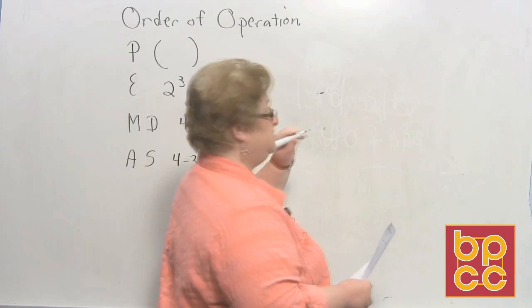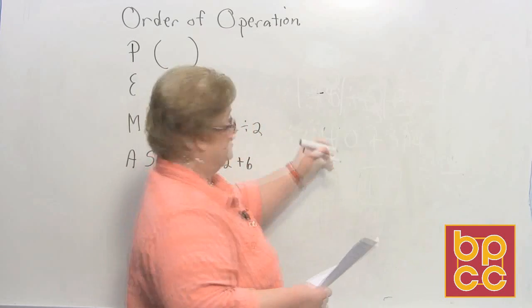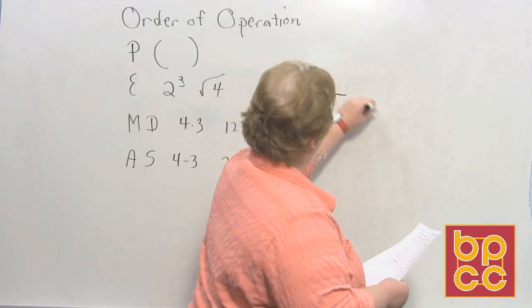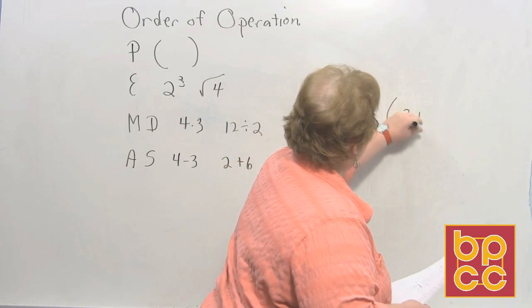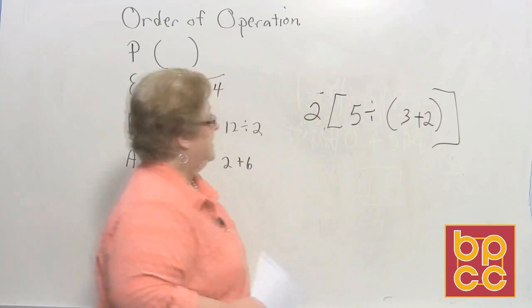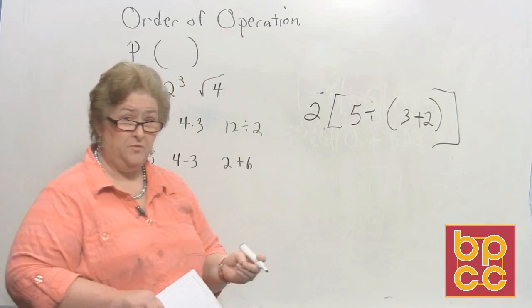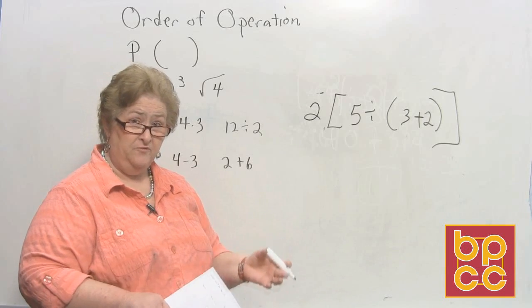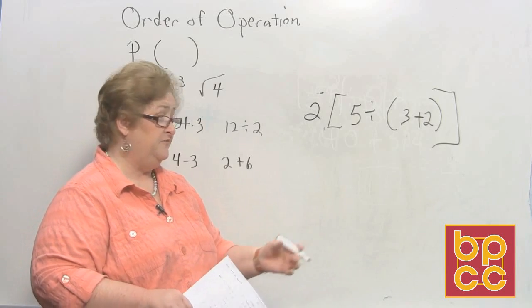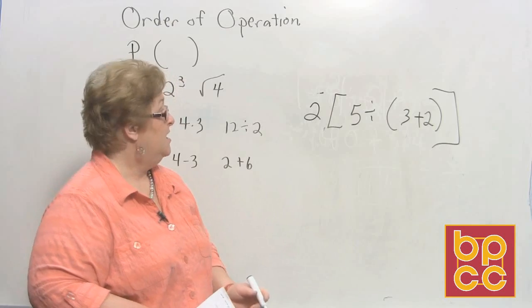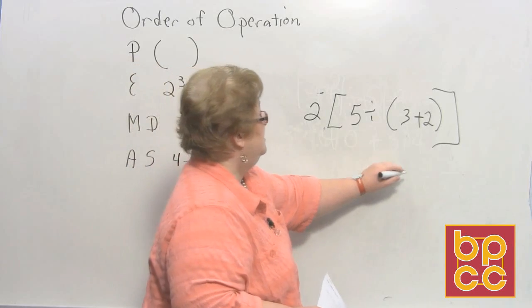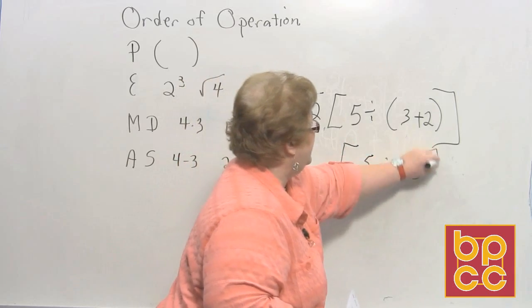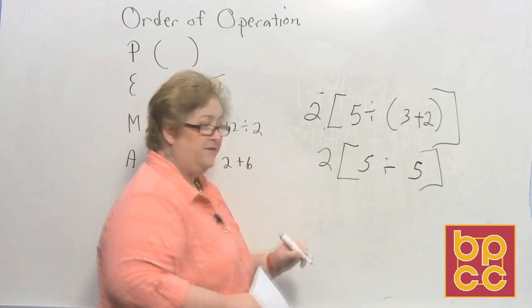All right. Let's try another one. I'd like to try this one using some parentheses and some brackets. I'd like to do 2 times the quantity 5 divided by 3 plus 2 in parentheses inside brackets. Now remember we said we're going to start with parentheses first. So I'm going to begin with 3 plus 2 so I can remove the parentheses. And then I'll be moving up to the next level which will be the brackets. All right. 3 plus 2 is 5. So now I have 5 divided by 5.